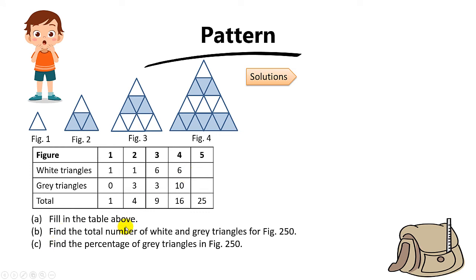We want to fill the table for figure 5. We are given the last row, which is the total number of triangles for figure 5. The most direct method is to draw figure 5 — you just insert one more row below, which is the white triangles. You can see the black triangles don't increase; you just insert the white triangles below and then count the number of triangles to get the same answer.